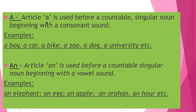Now we will talk about the article 'a'. 'A' is used before a countable singular noun — that means when we talk about one thing — beginning with consonant sounds. Words that start with consonant sounds take 'a'. For example: a boy, a car, a bike, a zoo, a dog, a university. So here: boy starts with B sound, car starts with a C sound, bike starts with B, zoo starts with Z, dog starts with D — these sounds are consonant sounds, and even the letters are also consonants. So we use 'a'.